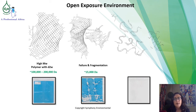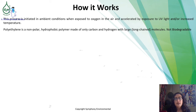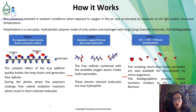This is how oxodegradable plastics biodegrade through the reaction with oxygen in an open environment, and this is called the D2W technology. This process is ambient when exposed to oxygen in the air and is accelerated by UV light. As you can see, polyethylene has carbon, oxygen, and hydrogen components. The D2W additive quickly breaks these long chains, which are then free to combine with oxygen and form hydroperoxides. The resulting short-chain hydroperoxides are then available for consumption by microorganisms.